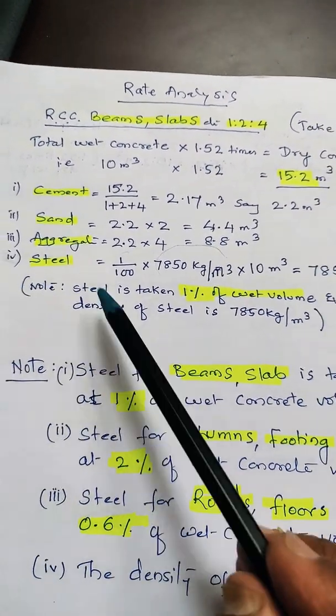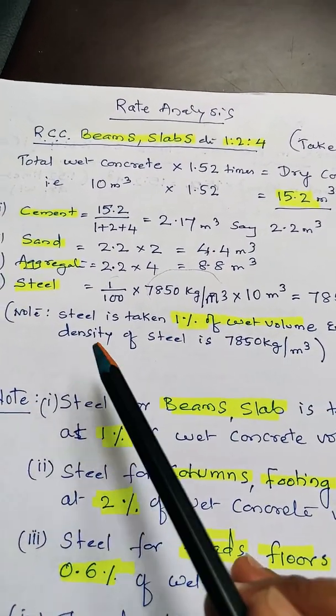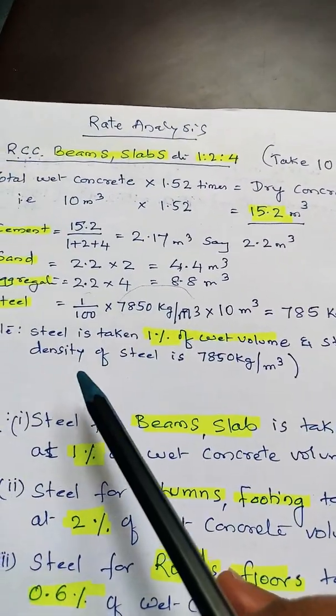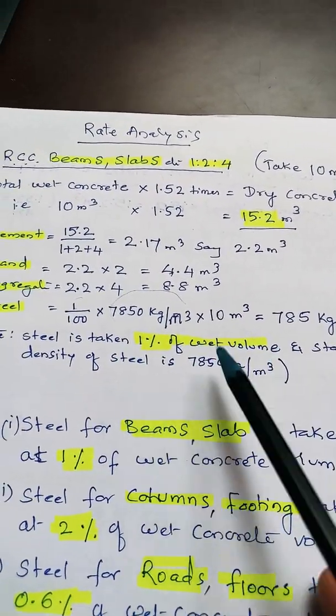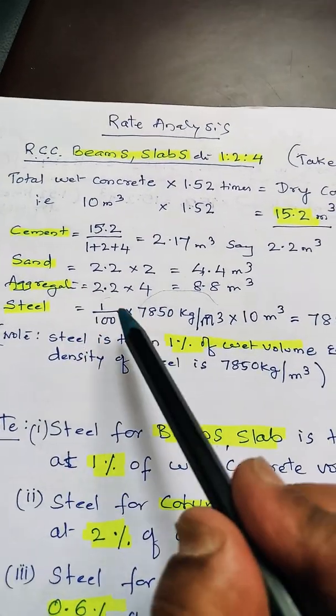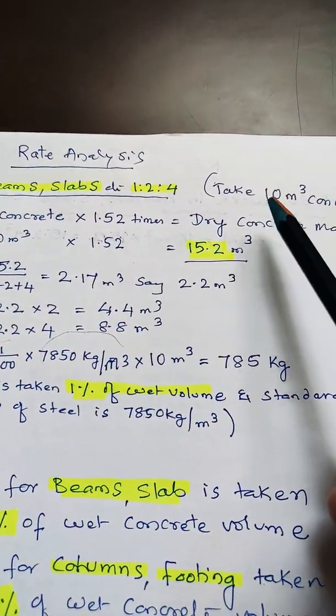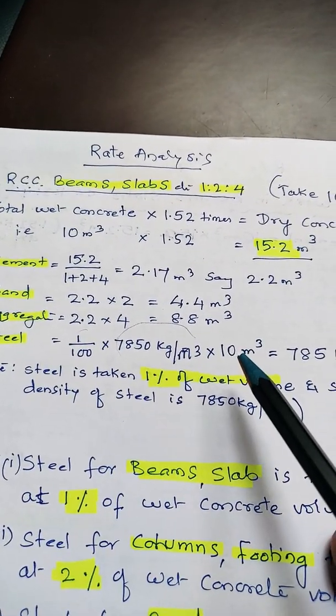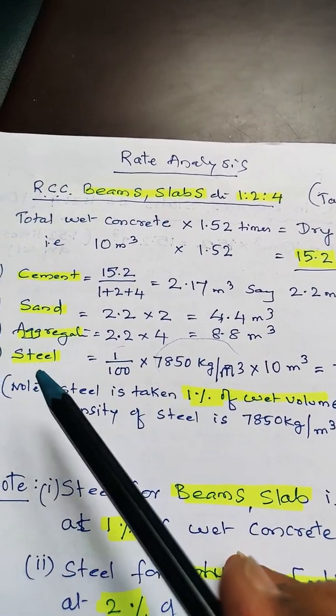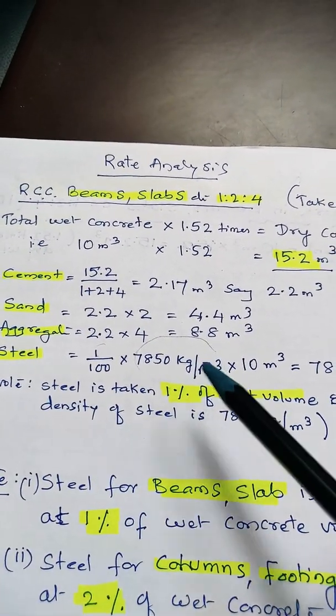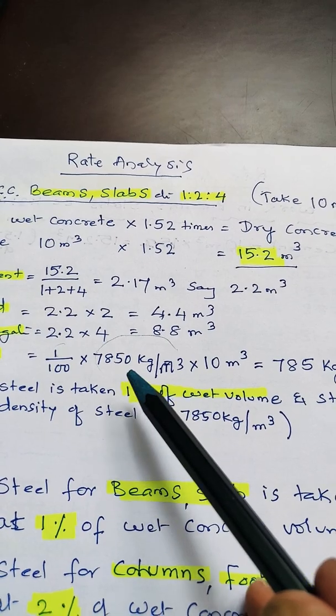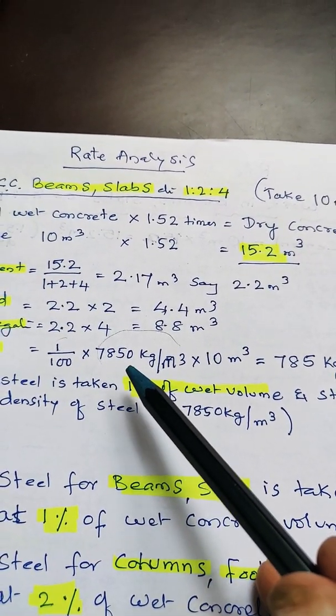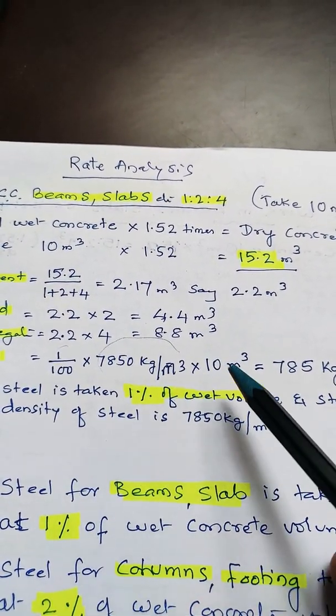Now we shall see what steel quantity we have to take. Steel is taken as 1% of wet volume at standard density. So 1% of 10 meter cube wet volume gives us the volume of steel. That volume multiplied by the density 7850 kg/m³ - this is standard density of steel - gives us 785 kg.